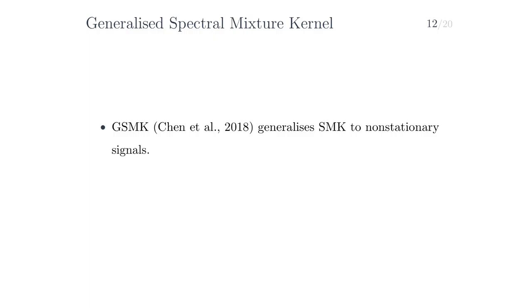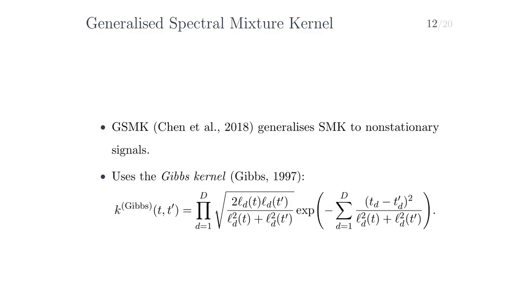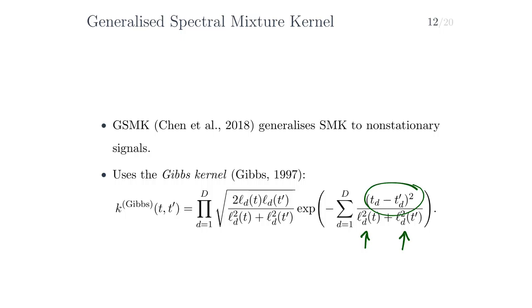Besides multiple outputs, the spectral mixture kernel can also be generalized to non-stationary signals. The authors called the resulting kernel the generalized spectral mixture kernel, abbreviated GSMK. Their construction makes use of a non-stationary generalization of the exponentiated quadratic kernel called the Gibbs kernel, where the length scales depend on time. The prefactor ensures positive definiteness, and is engineered such that the variance of the Gibbs kernel is 1 — if we plug in t' equals t, the prefactor yields 1.